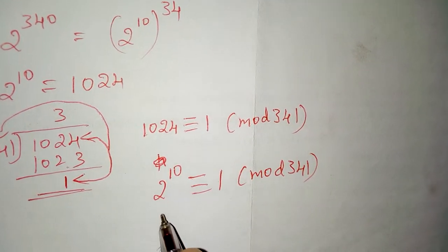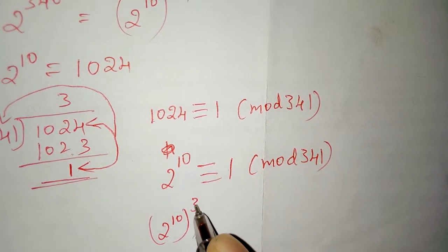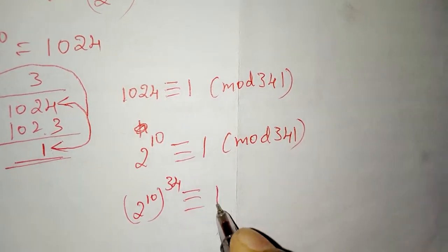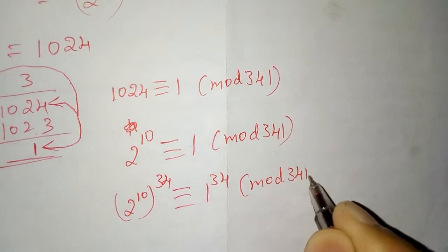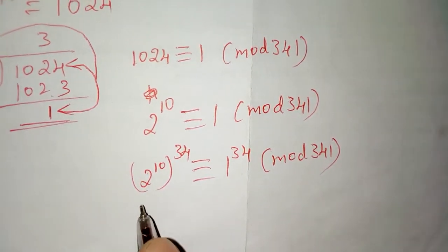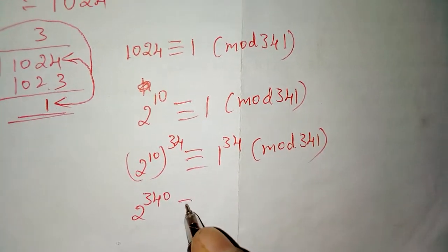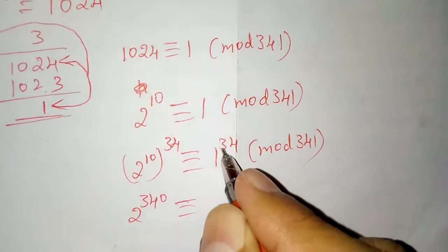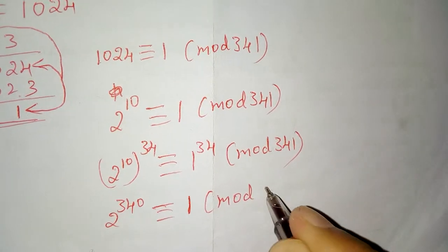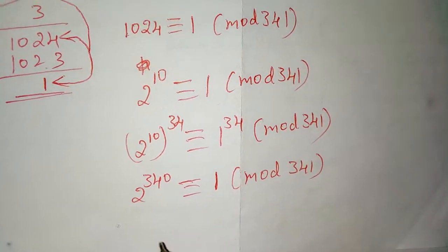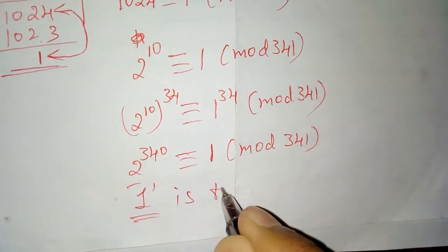So by the property of congruences we can raise the power: 2 raised to 10 raised to 34 and 1 raised to 34 equals 1 are congruent to mod 341. Here this is 2 raised to 340 and 1 raised to 34 equals 1 are congruent to mod 341. So this shows that 1 is the remainder.